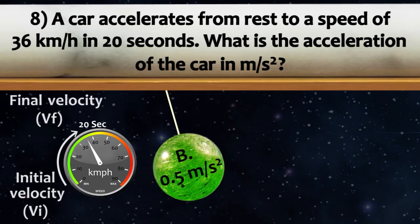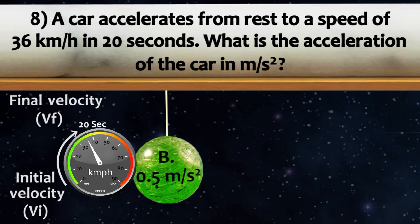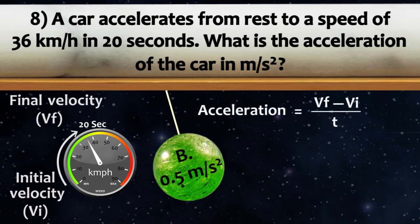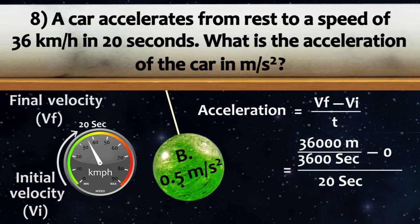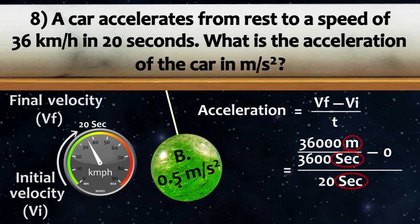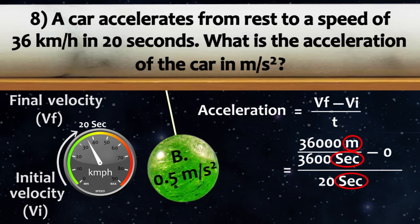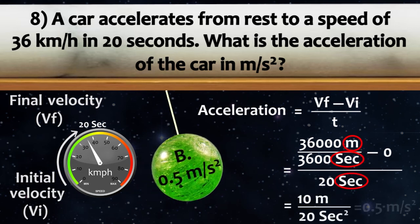Acceleration is the rate of change of velocity, which can be expressed as Vf minus Vi upon T. So, let's substitute the values. Let's convert the numerator in terms of meters per second to match the units of the denominator. And this is what we get.